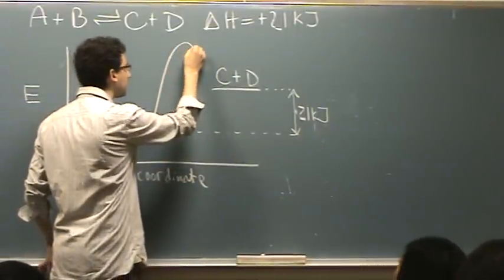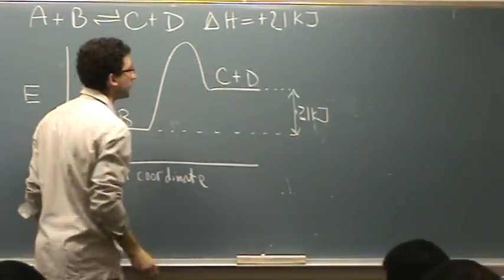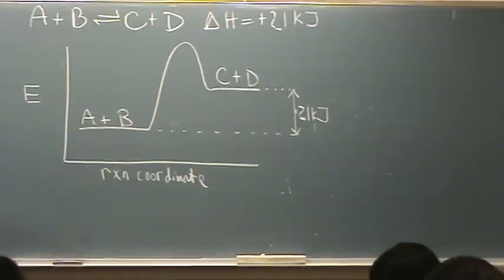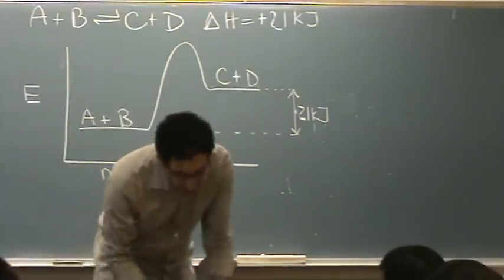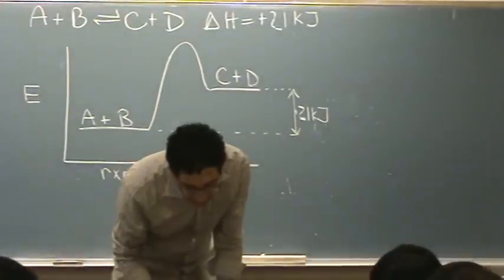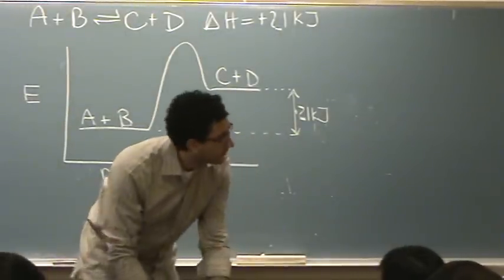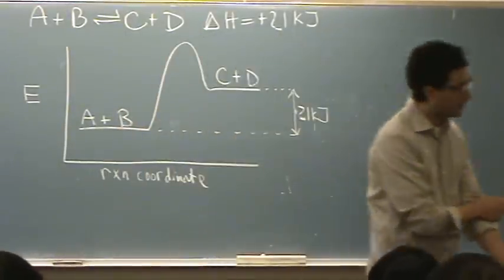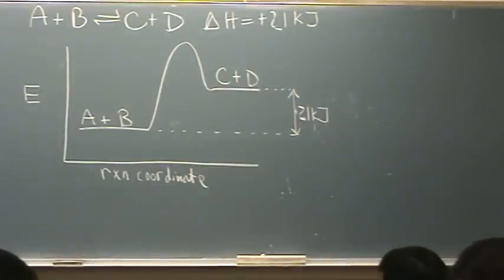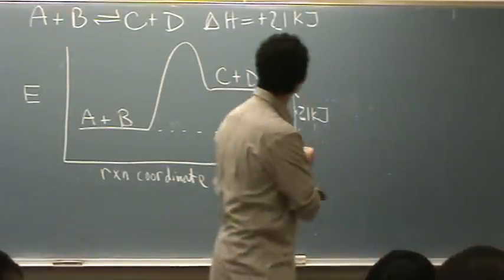We know there has to be some hump here. It also gives us the activation energy in the problem, is that right? I just want to double check. 84 kilojoules for the forward reaction? Yes, okay.